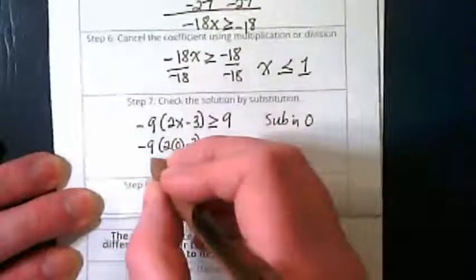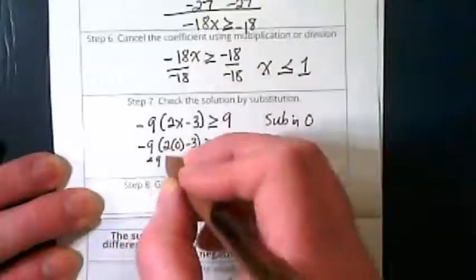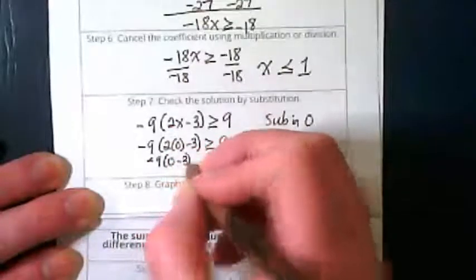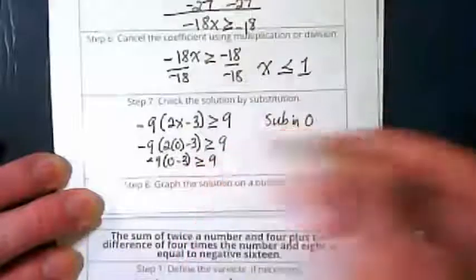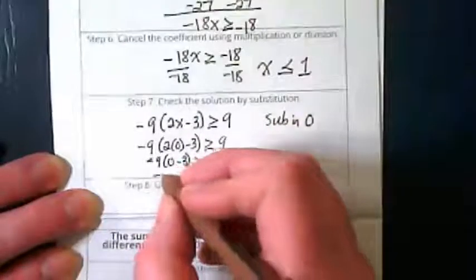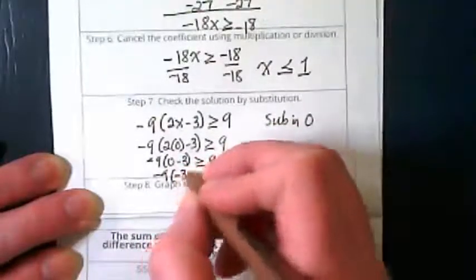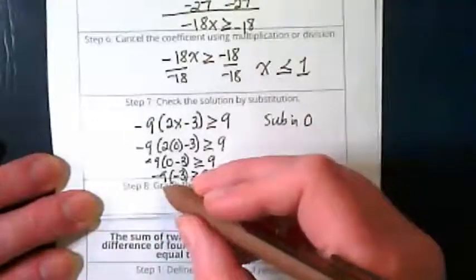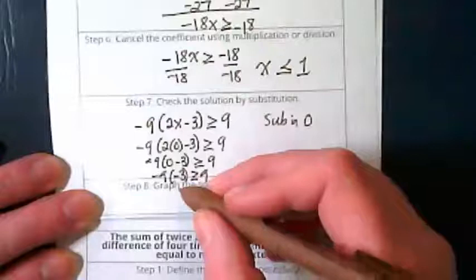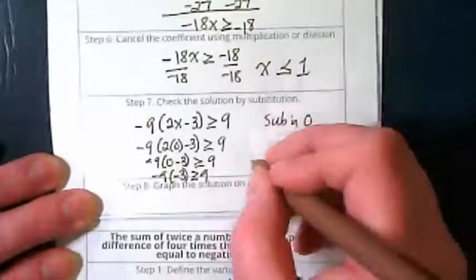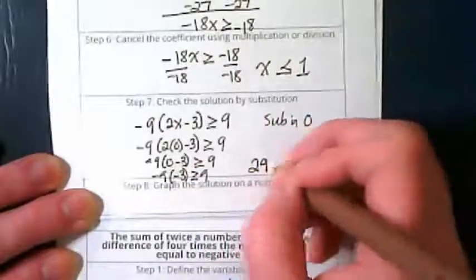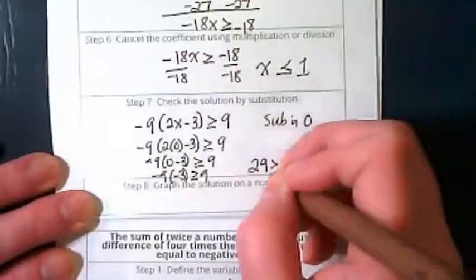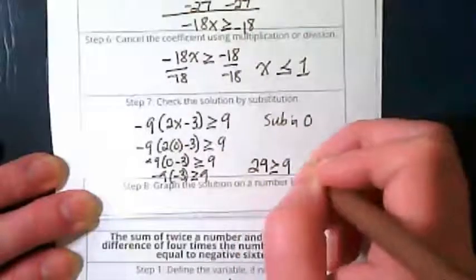I'm going to run out of room. Negative 9 times 0 minus 3 is greater than or equal to 9. I get negative 9 times negative 3 is greater than or equal to 9. Negative 9 times negative 3 is positive 27 is greater than or equal to 9. Is that true? Yes.